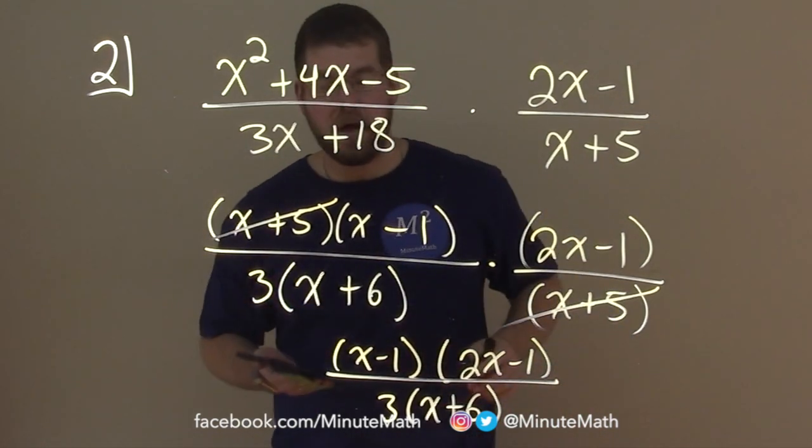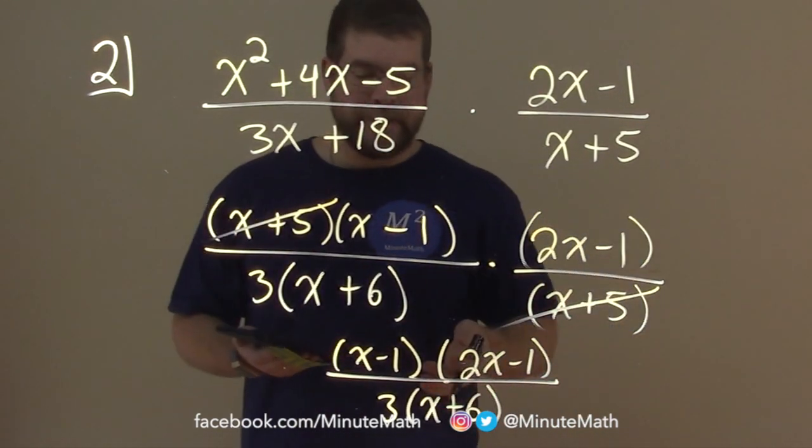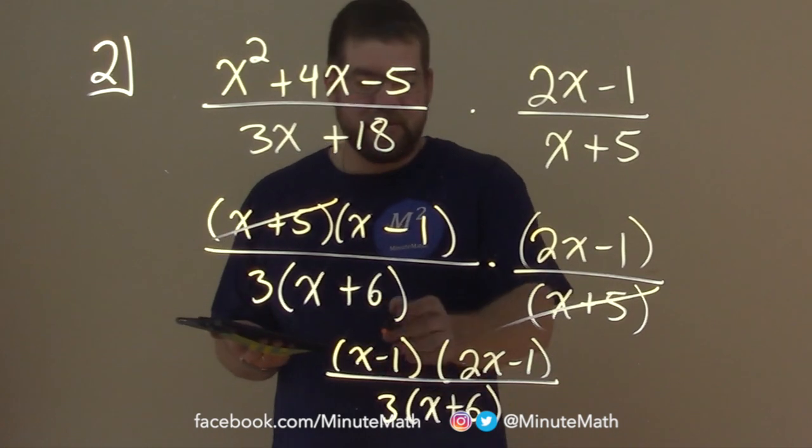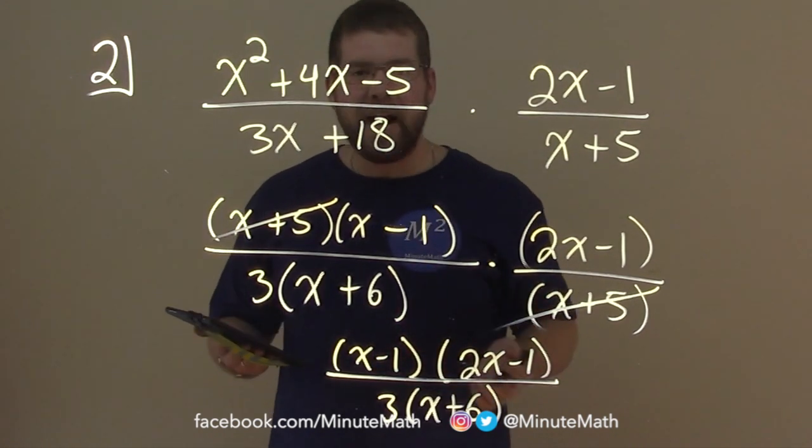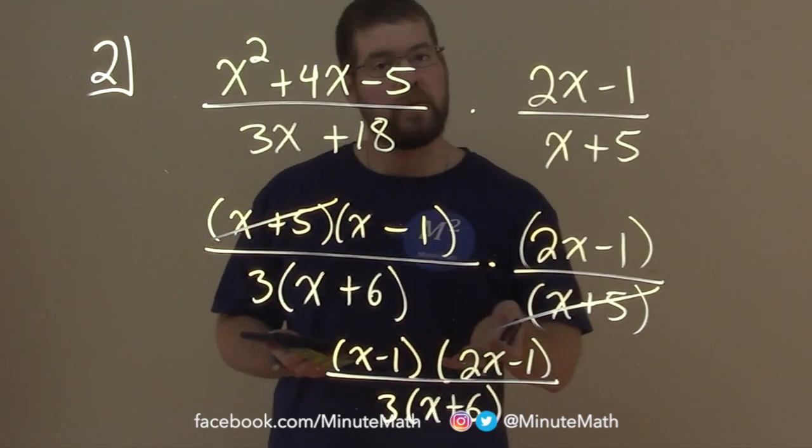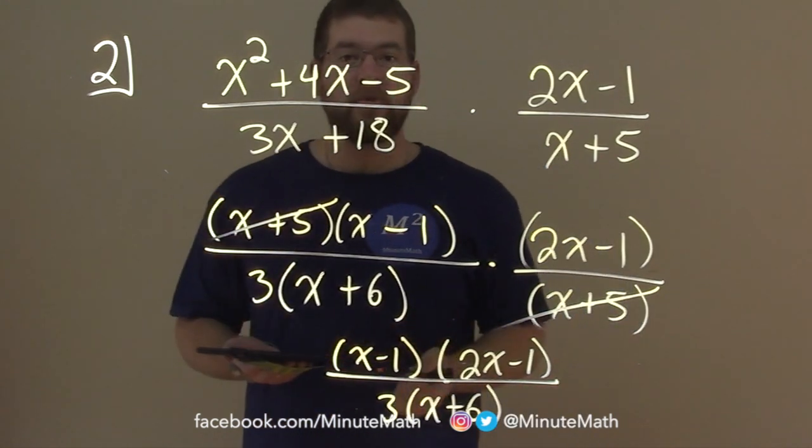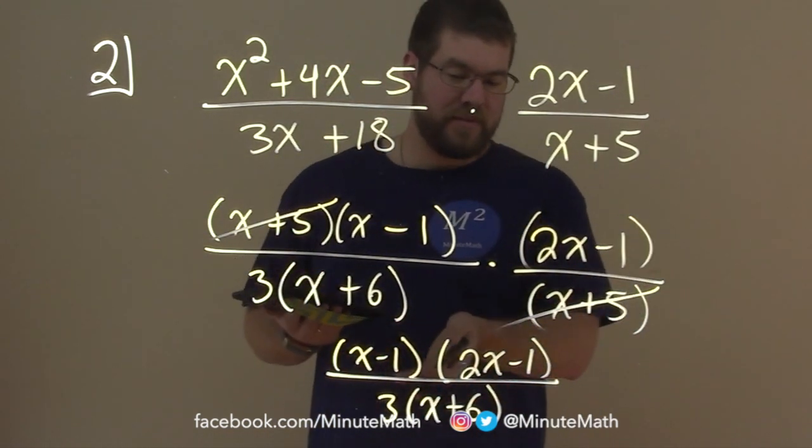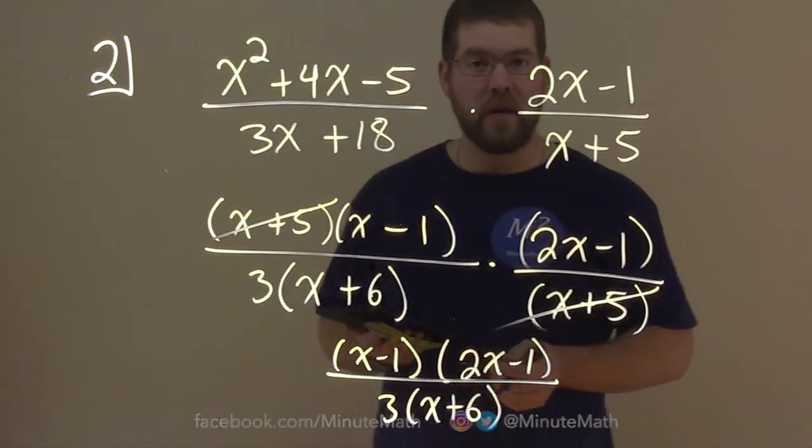Is there anything else we can do to simplify here? The answer is no. We could FOIL and multiply it back out, but I think it's easier and more simplified in this factored form. So we are essentially done. Nothing else can cancel out. We finished the problem.